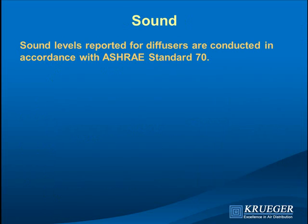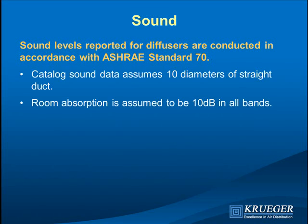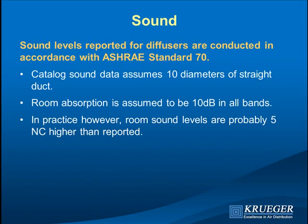For sound measurement, we use ASHRAE standard 70, which requires placing the device in a reverb room flush with the inside wall with 10 diameters of straight duct — so there's no inlet effect in our catalog data. We also assume 10 dB room absorption when calculating NC, which is probably not very realistic. A research study from the University of Nevada Las Vegas, reported in an April ASHRAE journal, recommends adding 5 NC to published data for everyone — not just Kruger — to account for inlet and room effects.